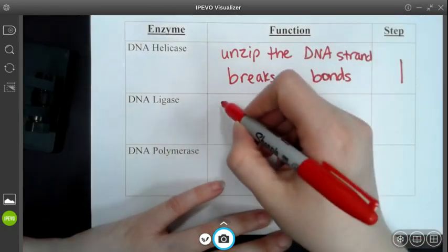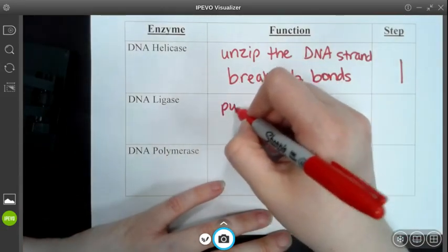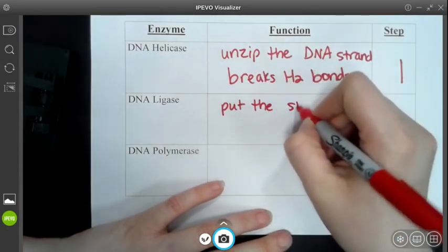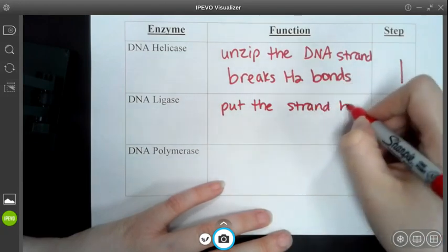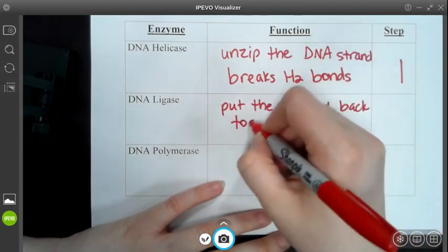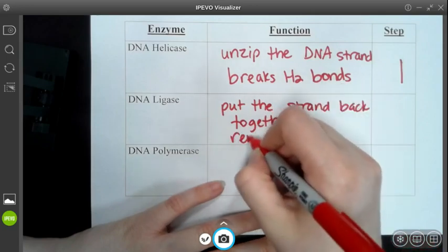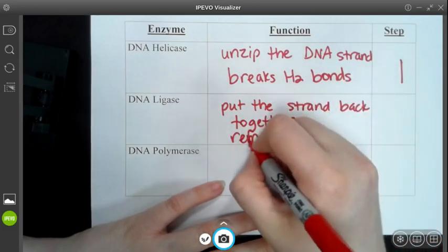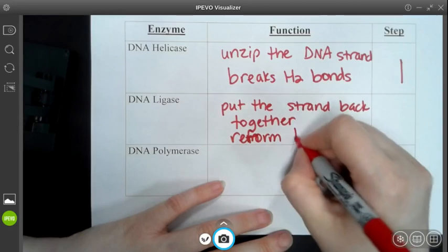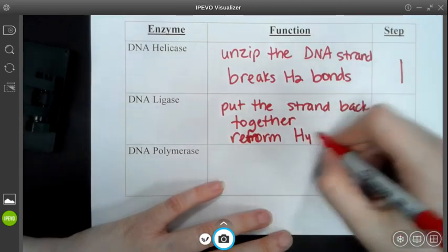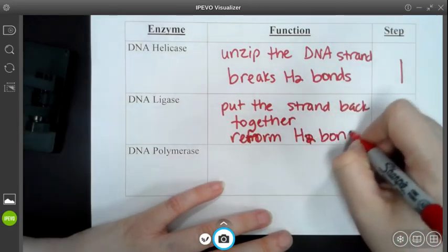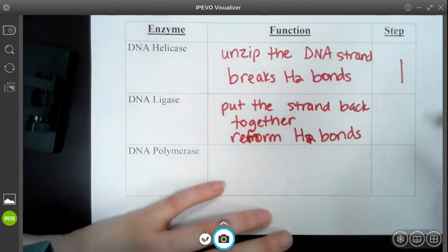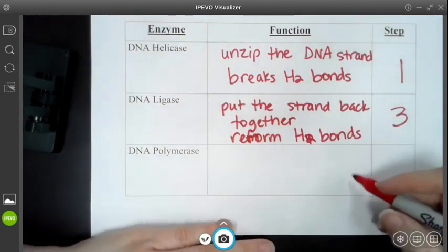DNA ligase is going to actually put the strand back together. And how it does this is it's going to reform those hydrogen bonds or H2 bonds. It's going to reform them. And that happens in stage three.